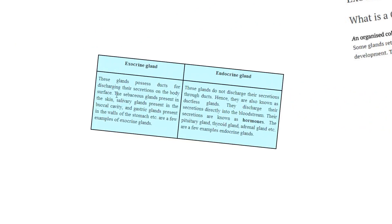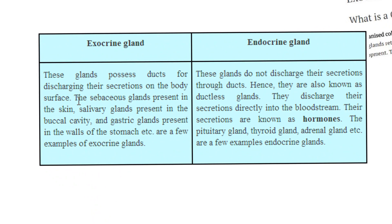Here's a nice table comparing the two. Exocrine glands have a duct. Examples include sebaceous glands in your skin that produce an oil-like substance, salivary glands — which are exocrine — secreting into the buccal cavity, which is your mouth. Another good example is gastric glands in the walls of the stomach, which make hydrochloric acid and secrete it to the lumen via a duct.